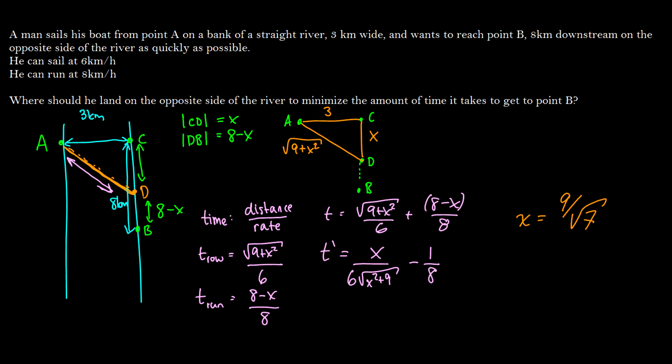So yeah, it's a little bit of a crazy number. But that means that when he sails across the river, he should, when he's finished sailing, he should be down from C 9 over the square root of 7 kilometers.